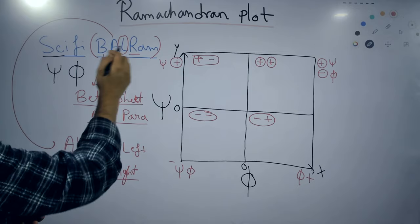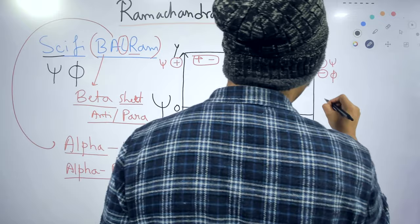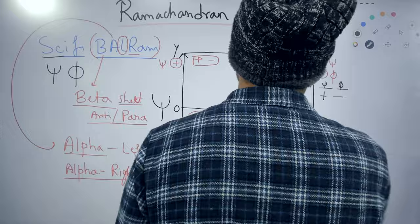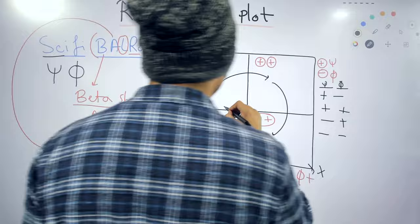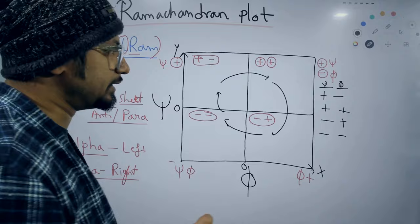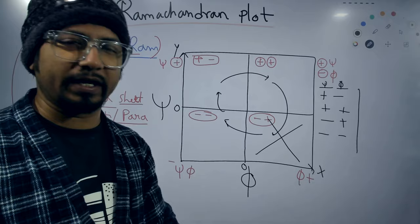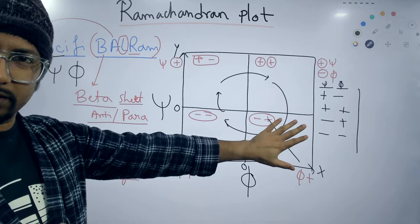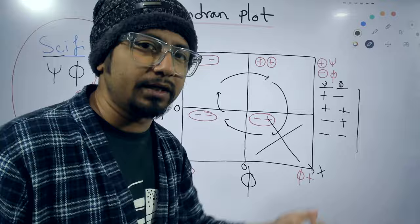Now, at which sequence do we get these structures? We move in a clockwise direction. Starting clockwise: first we have psi-plus/phi-minus, then psi-plus/phi-plus, then psi-minus/phi-plus, and last is psi-minus/phi-minus. Remember one important thing: one of these four quadrants — the psi-minus/phi-plus quadrant — is not allotted for any known secondary structure such as alpha helix or any beta sheet. So we always cross that quadrant out. The other three quadrants hold beta sheet, left-handed alpha helix, and right-handed alpha helix.